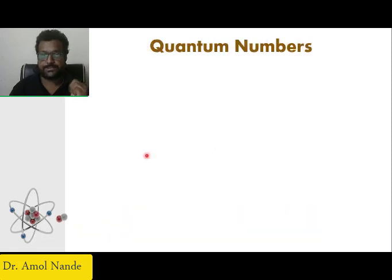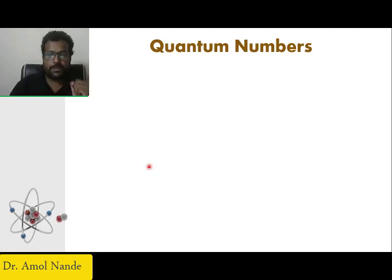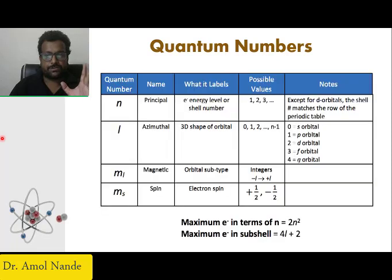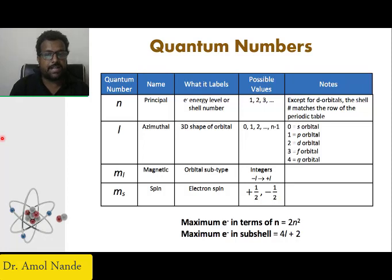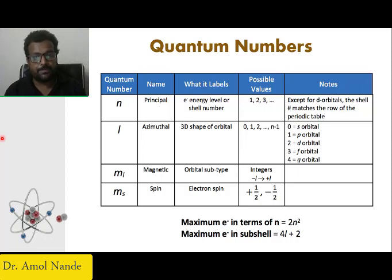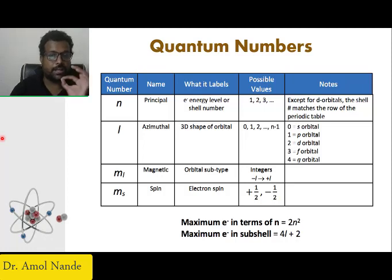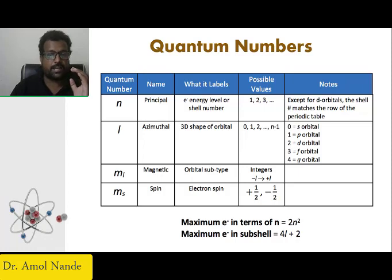To understand all this, you should understand the basic concept of quantum numbers. We need quantum numbers to describe the distribution of electron density in an atom. Why do you need quantum numbers? Quantum numbers are required to describe the distribution of electrons because of the wave function, which can be explained through quantum numbers.